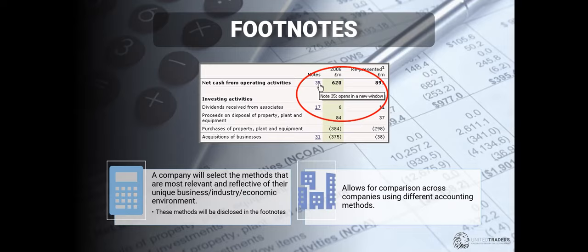Don't take everything that companies say at face value. However, at the same time, companies obviously know best what is going on inside their business. A company will select the methods that are most relevant and reflective of their unique business, industry, and economic environment. We recently had a lesson on why we would want to, at times, look at non-GAAP over GAAP earnings. Non-GAAP earnings are a way for a company to say, here's our results under the requirements asked of us, but we think our business is better represented by portraying the results differently.